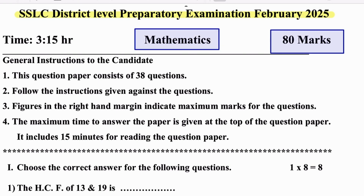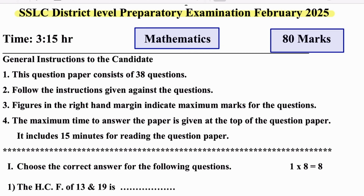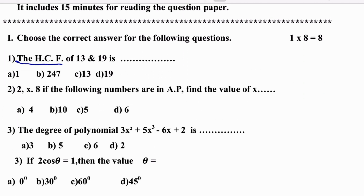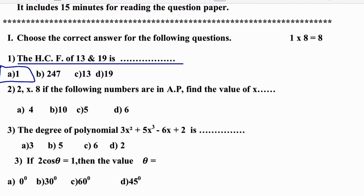Let me start with the first question. The HCF of 13 and 19 is dash. HCF means these two numbers are prime numbers, so we have to say 1 is the HCF.